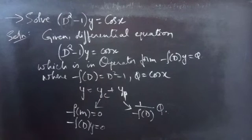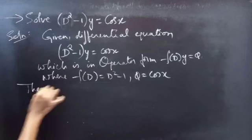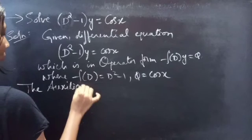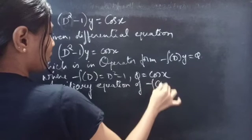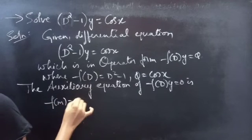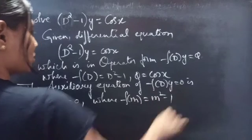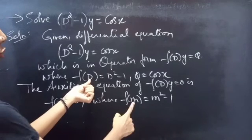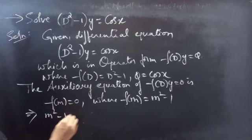Let's find the complementary function using the auxiliary equation of the homogeneous equation. The auxiliary equation of f(D) · y = 0 is f(m) = 0, where f(m) = m² − 1. Since f(D) = D² − 1, we replace the differential operator D by m to get f(m) = m² − 1. So our auxiliary equation becomes m² − 1 = 0.